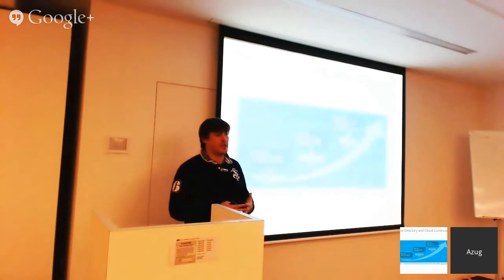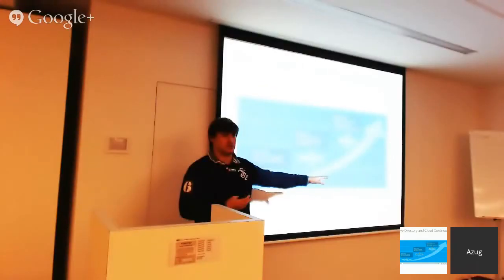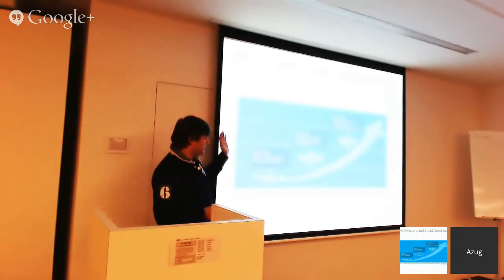If you go Platform-as-a-Service with Windows Azure AD, you have self-provisioning, management, scale to your needs, and it's fault tolerant — as a service. You don't need to do anything other than provisioning and managing; all the hardware is taken care of. But only if you don't need group policies. The continuum is: either you get control or you get abstraction.